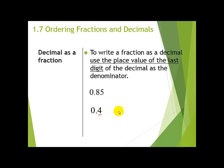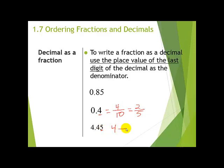For 4.45: I know this will be a mixed number, so I keep the 4. The digit 5 is in the hundredths place, so the denominator is 100 and the numerator is 45, giving 4 and 45/100. Simplifying: 45 divided by 5 is 9, and 100 divided by 5 is 20, so this becomes 4 and 9/20. All three forms — 4.45, 4 and 45/100, and 4 and 9/20 — are equivalent.